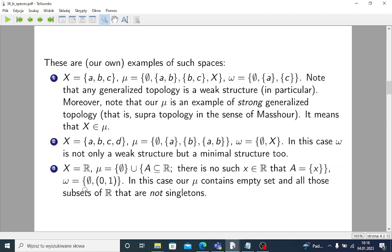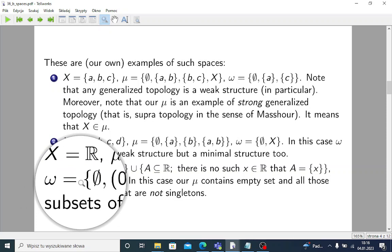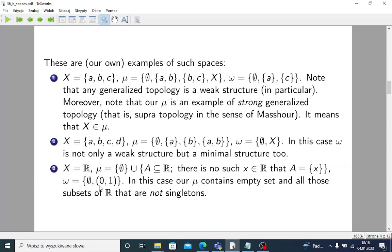Our generalized topology contains empty set and all those subsets of real line that are not singletons. It's easy to check that unions of such sets are of the same form and their intersections not necessarily. And some weak structure that contains empty set and interval (0,1) which is open on both sides.